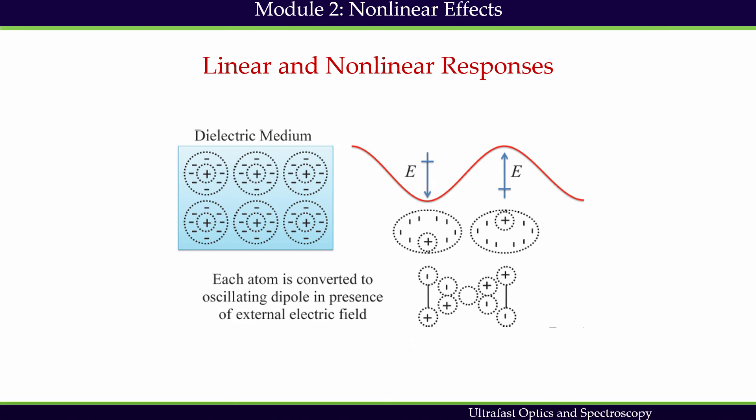A dielectric medium is an electrical insulator that can be polarized by an applied electric field. According to the classical model, a dielectric medium is made of atoms and does not have free electrons. All electrons are bound to the positive ion core. Each atom consists of a cloud of negative electrons bound to a positive charge at its center. There is no freely moving conducting electron in a dielectric medium.